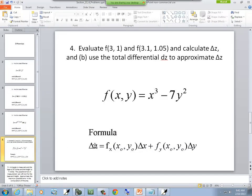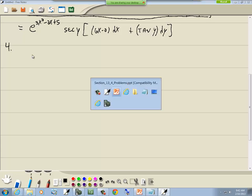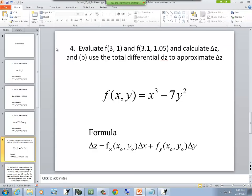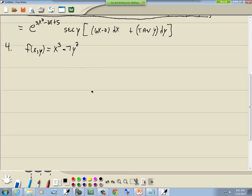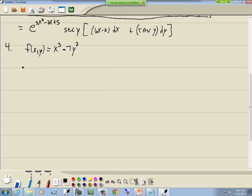Number 4. We're given f of xy equals x to the third minus 7y squared. It says evaluate f of 3, 1. So let's do that first. We'll plug in 3 for the x, 1 for the y. So we've got 3 to the third minus 7 times 1 squared. 3 to the third is 27 minus 7 gives us 20.